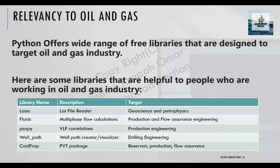You have another library called CoolProp — originally not a Python library but converted to one. It's a very famous library used to create PVT properties, equation of state calculations, critical temperature, critical pressure, bubble point, dew point — basically any property you want. It also accepts compositional inputs like methane, ethane, propane, and butane with any percentage you like.